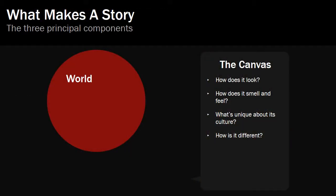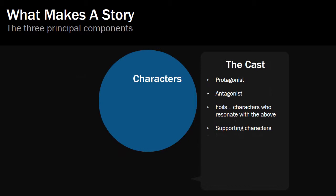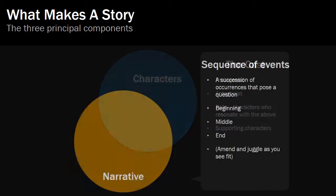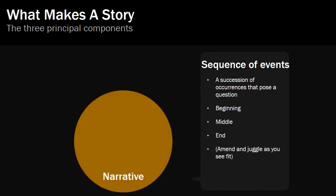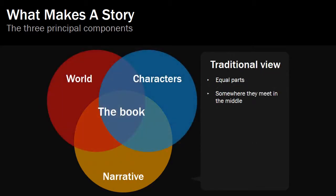There are three basic elements to a book for me. The first is the world, and that's much more than location — it's about how a place smells and feels, its local culture. The second is the cast: the protagonists, the antagonists, the foils, the supporting characters who give the story, hopefully, some depth. And finally, there's the narrative: a succession of events and problems that our characters must wrestle with and solve. Mix those three together and you will get a book, like this.